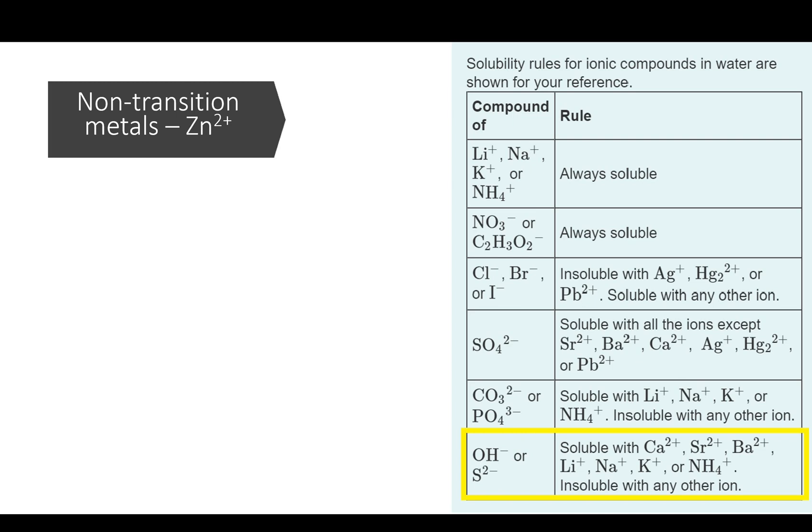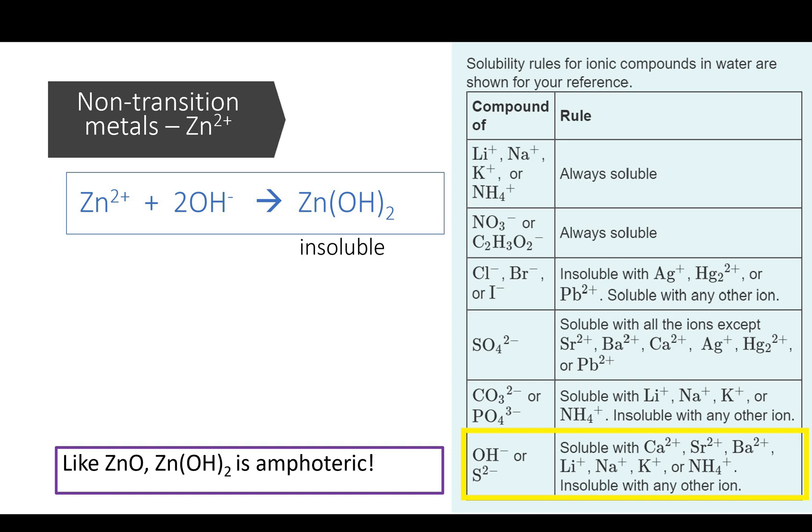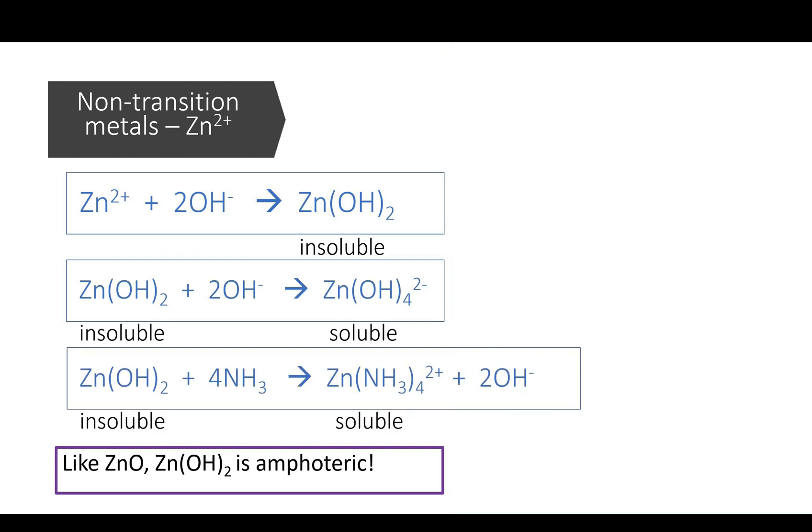The explanation for zinc ion is similar to that of aluminum ion. Zinc hydroxide is insoluble, but just like zinc oxide is amphoteric, which means zinc hydroxide can further react with excess hydroxide to form a soluble ion. The only difference here is that because zinc ion can form a soluble complex with ammonia, therefore zinc hydroxide dissolves in excess ammonia.